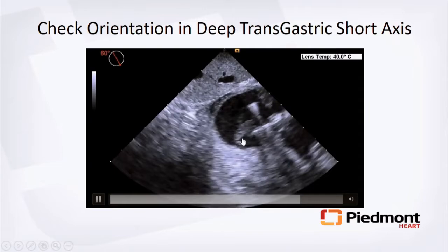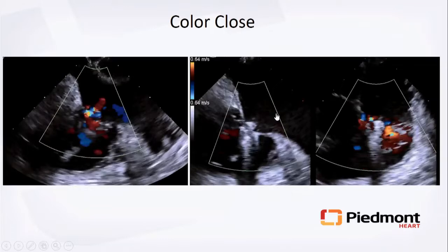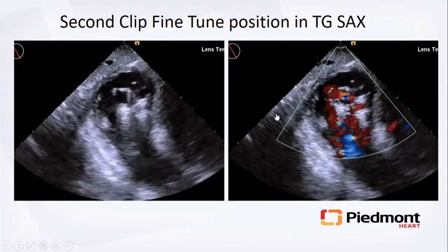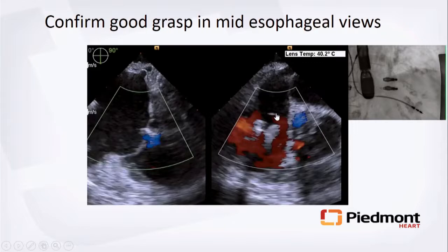Switch to transgastric short axis to confirm position: antero-septal commissure, septal leaflet, and anterior leaflet are identified. Once happy, open the clip arms to grasp the leaflets, go back to mid-esophageal view, drop the grippers, then close. Always check the gradient and consider a second clip if there is residual tricuspid regurgitation. The final result after two XTW clips in the tricuspid valve is shown.